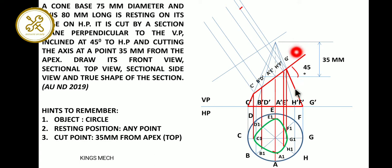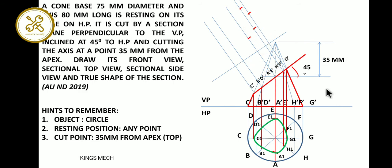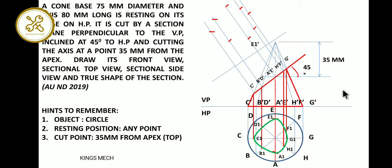Draw the reference line. From the end of the length, we can get the E1 distance which is the shortest distance. The B and D distance is the next distance. After that, C length gives C1. Finally, mark B1, E1, D1, C1, B1, A1, H1, G1, F1 for the sectional side view.